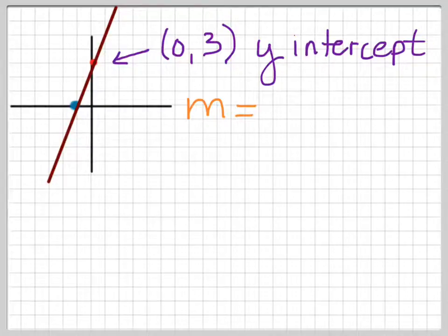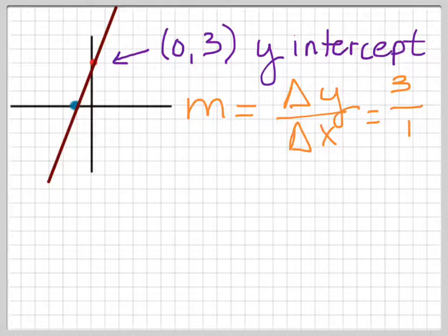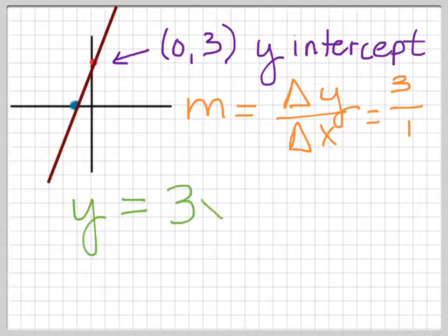The second thing we need is the slope. Remember, slope is the change in y divided by the change in x. When reading a graph, we read it like a book — left to right. So the first point we encounter is the blue point, and we go from the blue point to the red point. Moving from blue to red, we go up three units — that's positive three — and over one unit in the x direction, giving us a slope of three. So our equation is y equals 3x plus 3.